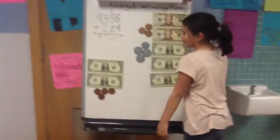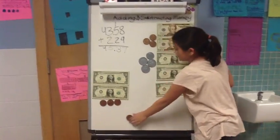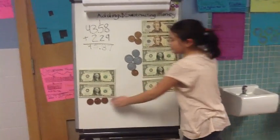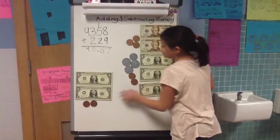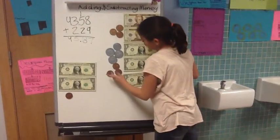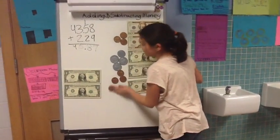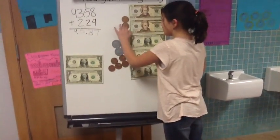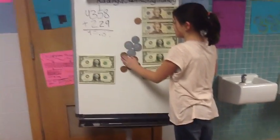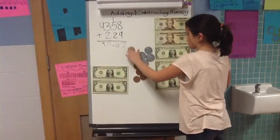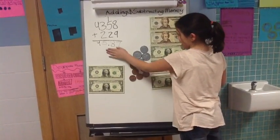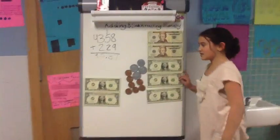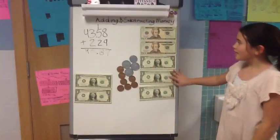Then we add all our pennies: 81, 82, 83, 84, 85, 86, 87. So we have our same exact change here.